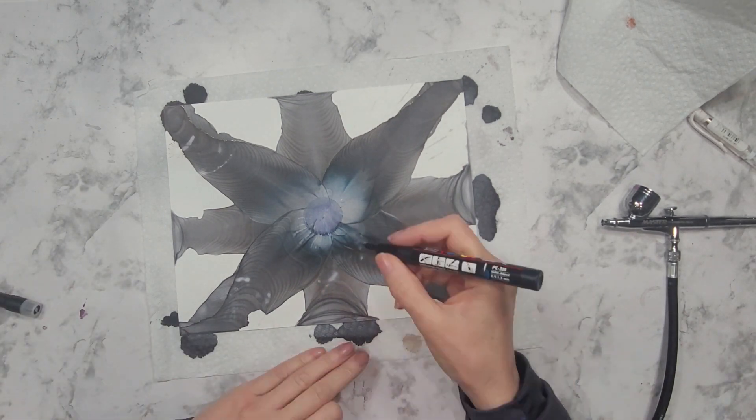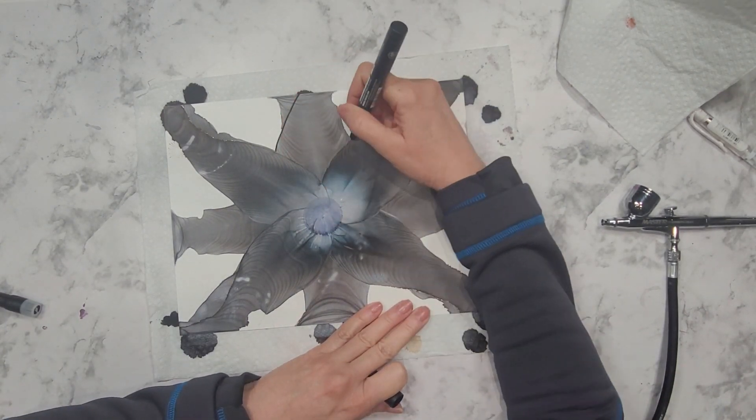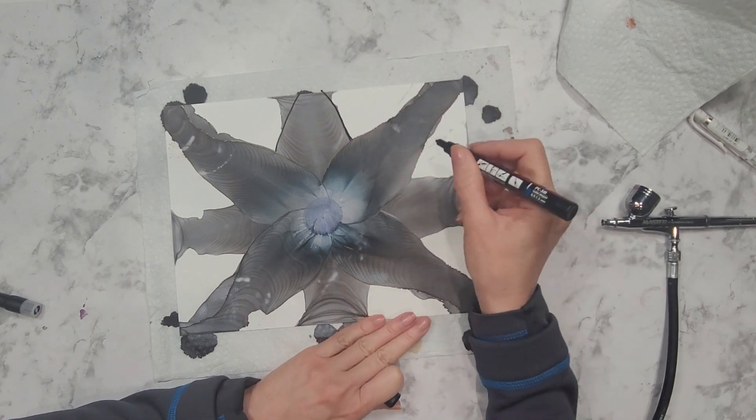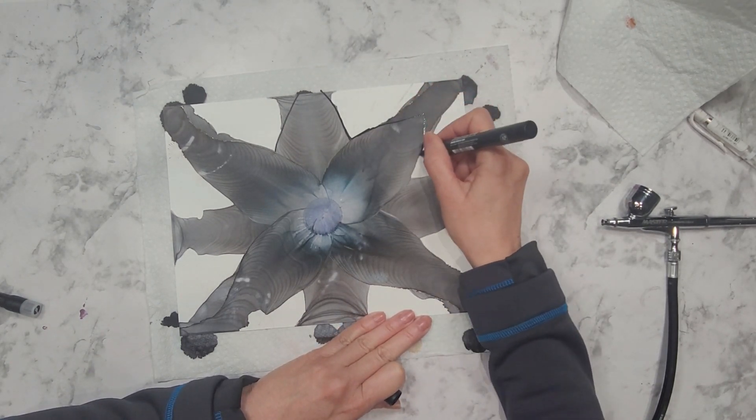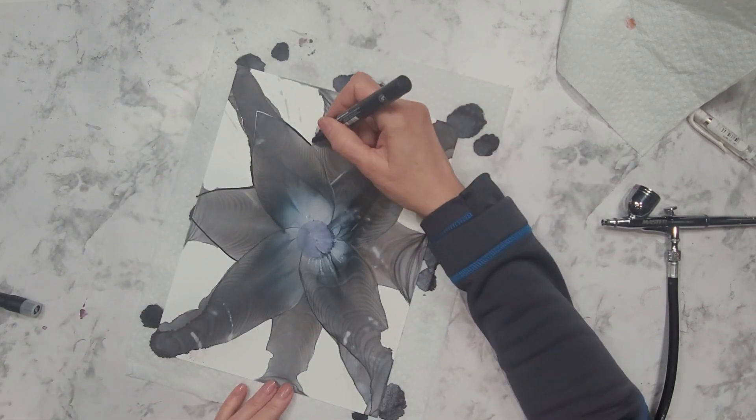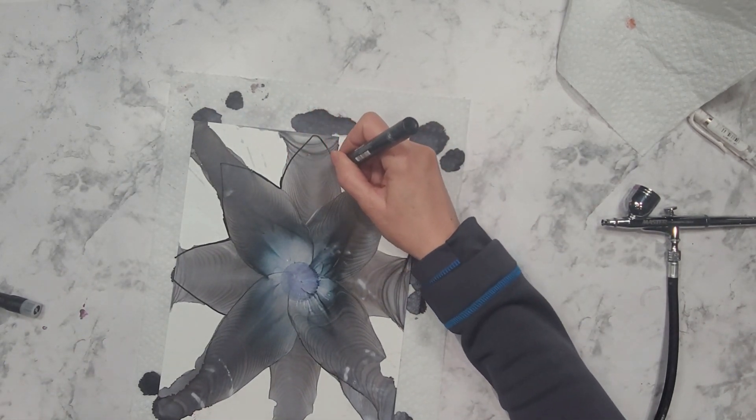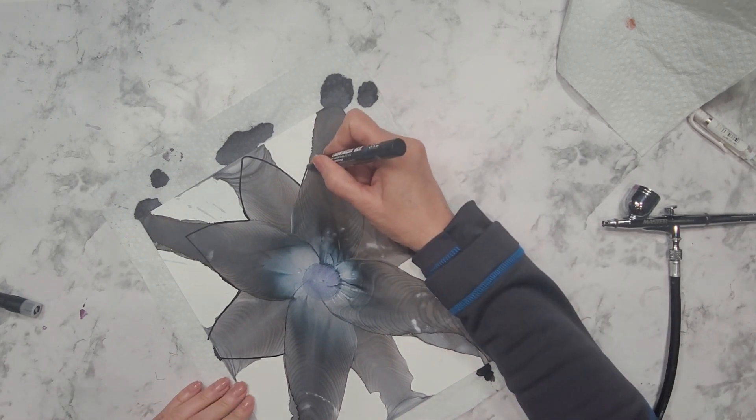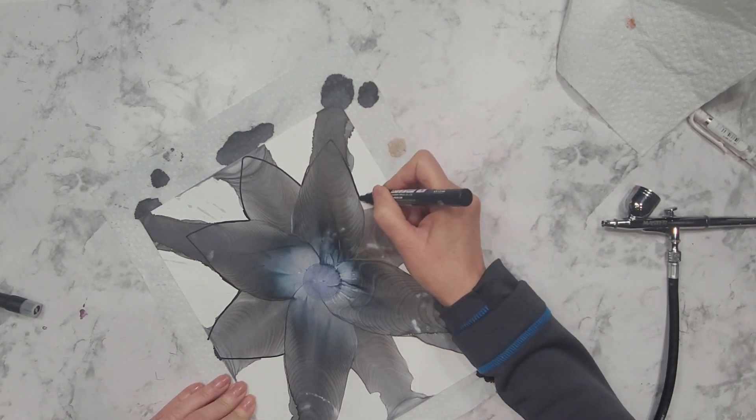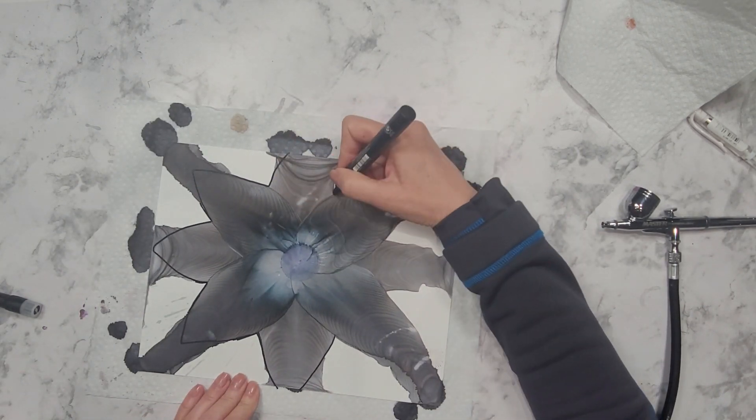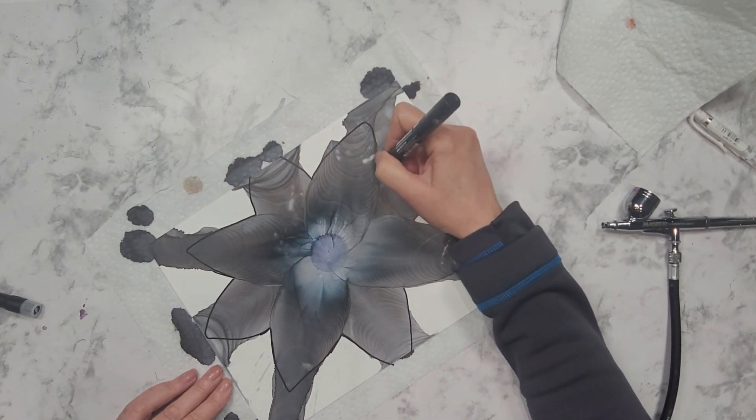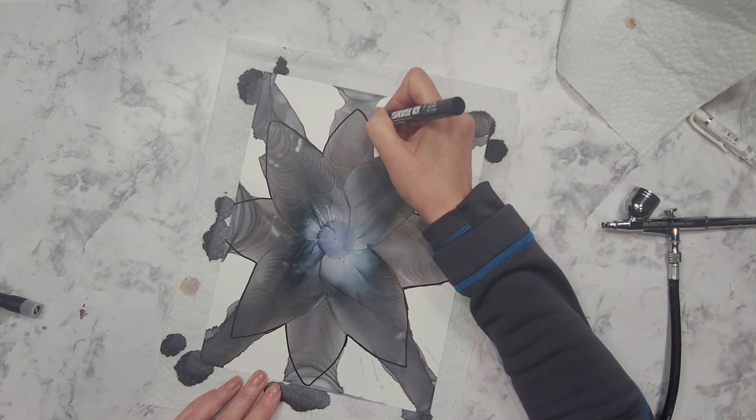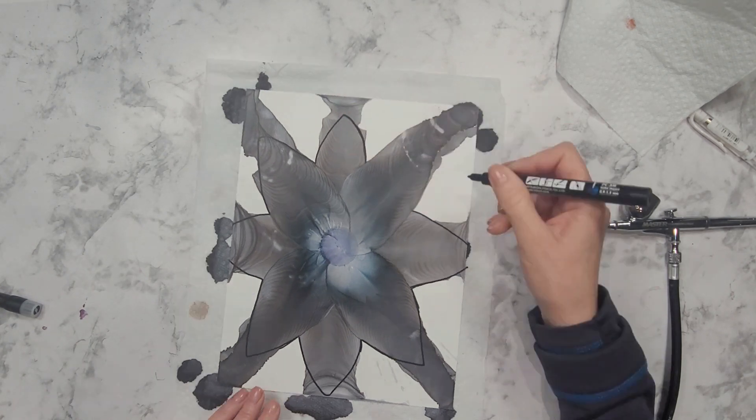Now I'm going to take a Posca pen with a finer nib. I'm going to define the shape of the petals that I want to keep in this painting. I'm using a finer nib to start with. Once I define the shape of the petals that I want to keep, I will use a Posca pen with a broader tip.